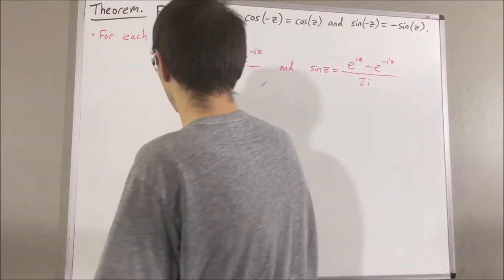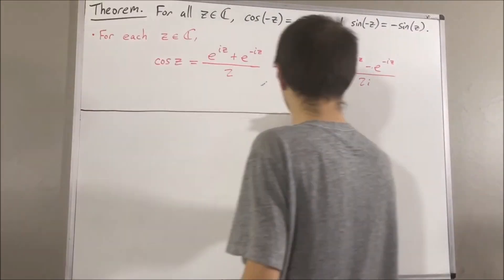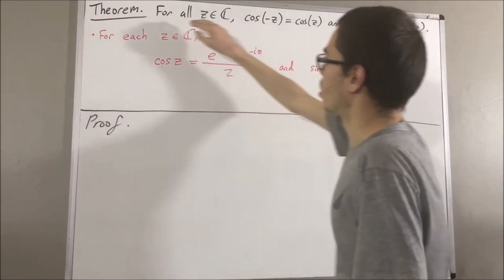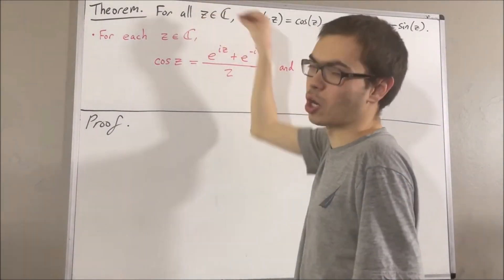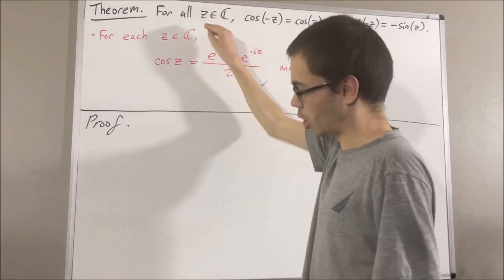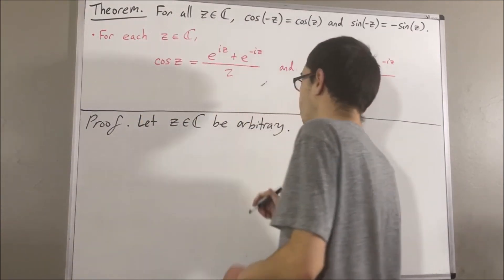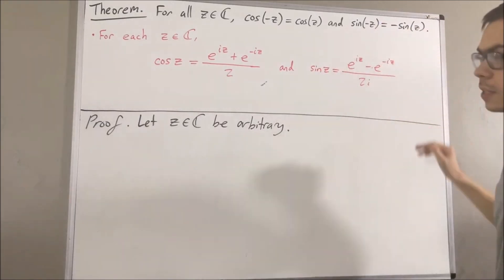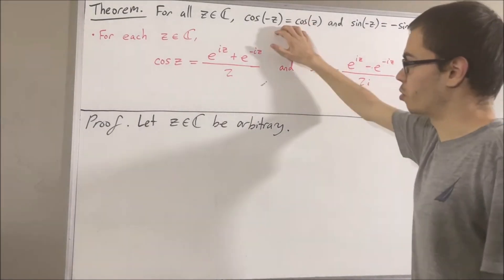So now let's get into proving this theorem. Since we're trying to prove a statement about all complex numbers, let's give ourselves an arbitrary complex number, call it z. From here, we want to show that these two facts hold. Let's deal with cosine first.